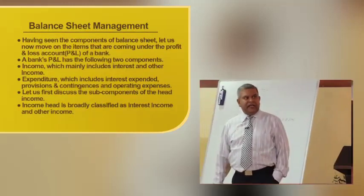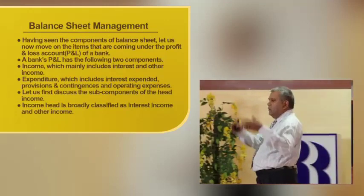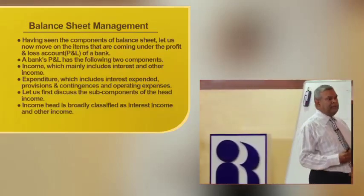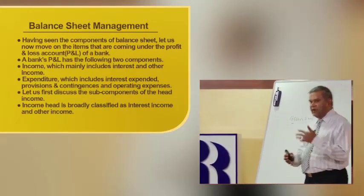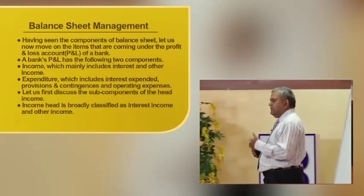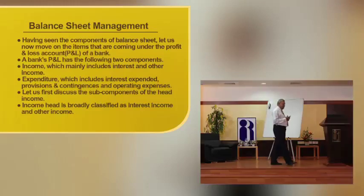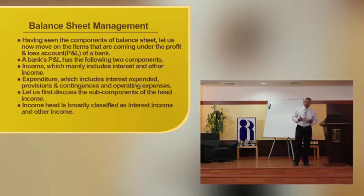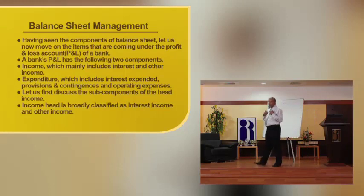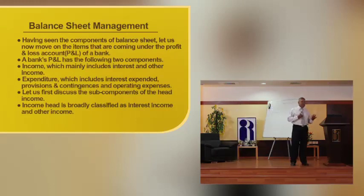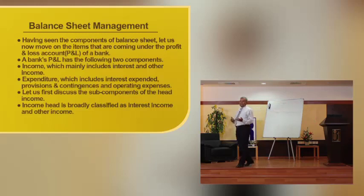We have now seen the components on the asset side of the balance sheet. Now, the balance sheet should be supported by a profit and loss account. From the profit and loss account, we can know whether the bank has made a profit or a loss. These statements are called financial statements. The investor and stakeholder come to know whether the bank is in profit or in loss. We have already discussed what is the balance sheet; now we are going to discuss what is the profit and loss account.